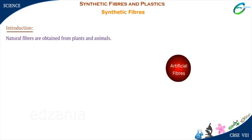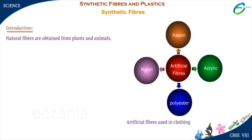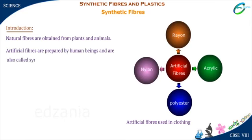Some of the most common artificial fibers used in clothing are nylon, rayon, acrylic and polyester. Artificial fibers are prepared by human beings and are also called synthetic fibers or man-made fibers. Let us explore more about synthetic fibers.